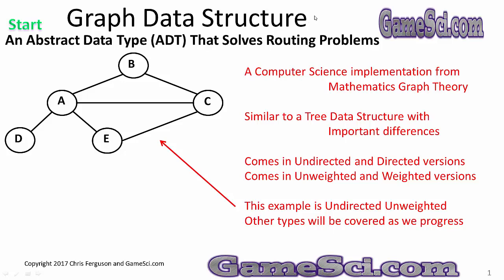Time for a slide on the graph data structure — an abstract data type, ADT, that solves routing problems. A computer science implementation from mathematics graph theory. Similar to the tree structure with important differences, it comes in undirected and directed versions, and in unweighted and weighted versions. This example is undirected and unweighted. Other types will be covered as we progress.